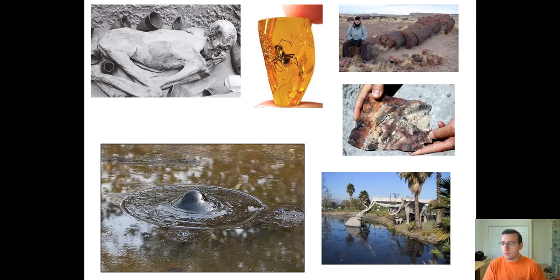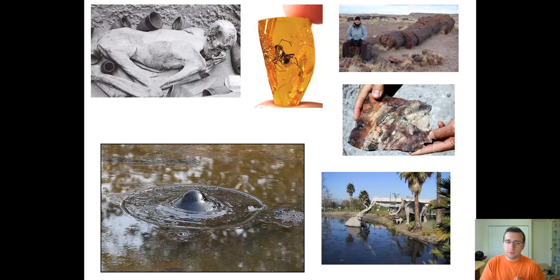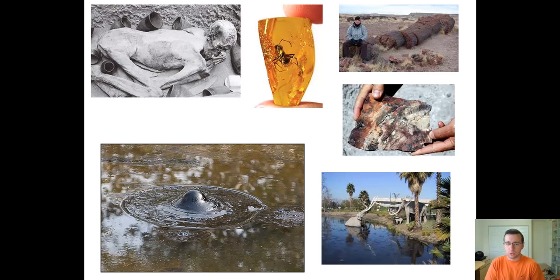Another process of fossilization involves remains preserved in hardened tree sap that becomes almost mineralized, which we call amber. Sometimes insects that were in the tree are trapped in this amber, and in rare occasions we have even found evidence of DNA from these very old remains. It can take millions of years for amber to erode, so we have found specimens that are millions of years old.